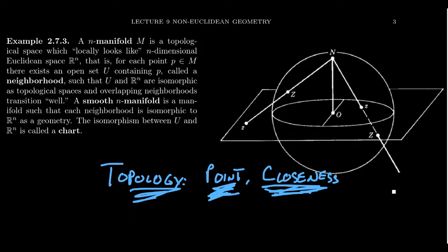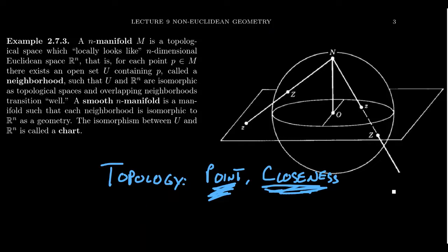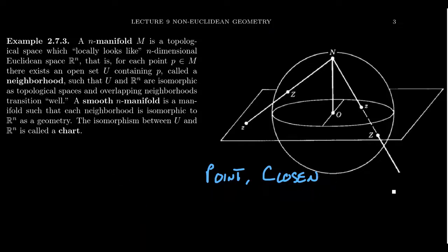In a calculus class you might have taken before, you probably talked about the precise definition of the limit using epsilon and delta. The idea is you're constructing epsilon neighborhoods and delta neighborhoods — these balls or circles of radii epsilon and delta. As epsilon gets smaller, we shrink delta. So you're doing topology in a metric space when you talk about epsilon-delta proofs of limits. But in the general topological setting, you don't need a metric or a distance function — you can still use open sets to talk about convergence. Topology is the geometry for which we can still do calculus.